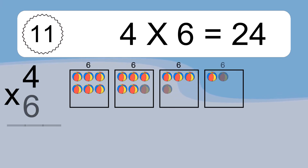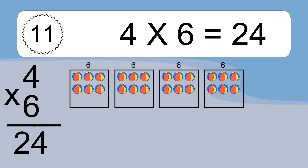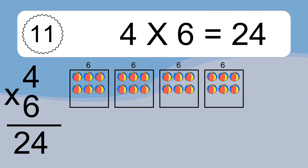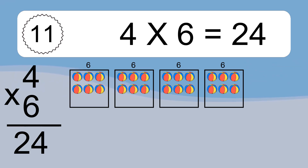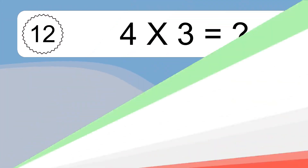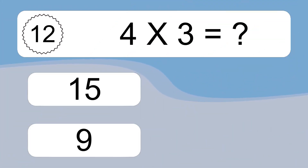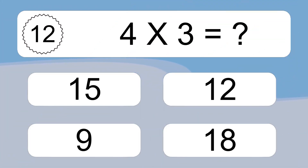4 times 6 equals 24. We have 4 boxes, and each box has 6 colorful balls inside. If you count all the balls in all the boxes together, you will have 4 times 6 balls. This equals 24 balls.